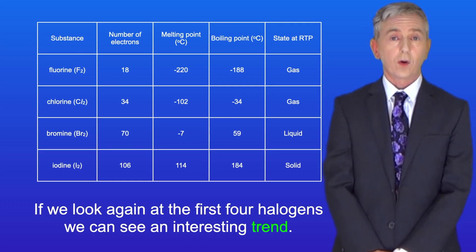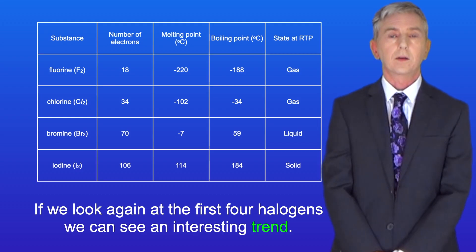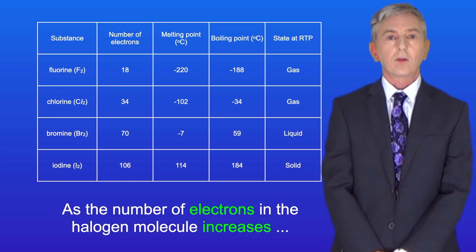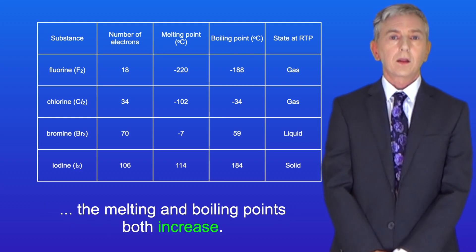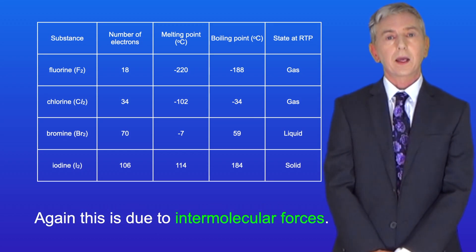Now if we look again at the first four halogens we can see an interesting trend. As the number of electrons in the halogen molecule increases the melting and boiling points both increase and again this is due to intermolecular forces.